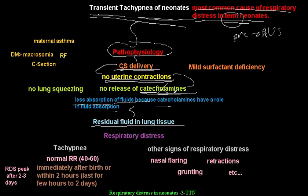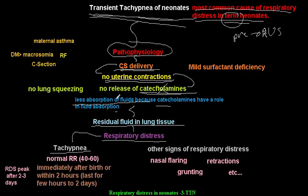The residual fluid in the lung tissue will interfere with normal respiration of the child and that will lead to respiratory distress. The most important presentation of respiratory distress in children with transient tachypnea of the neonate is tachypnea — so it is transient tachypnea, and tachypnea is the most important presentation.